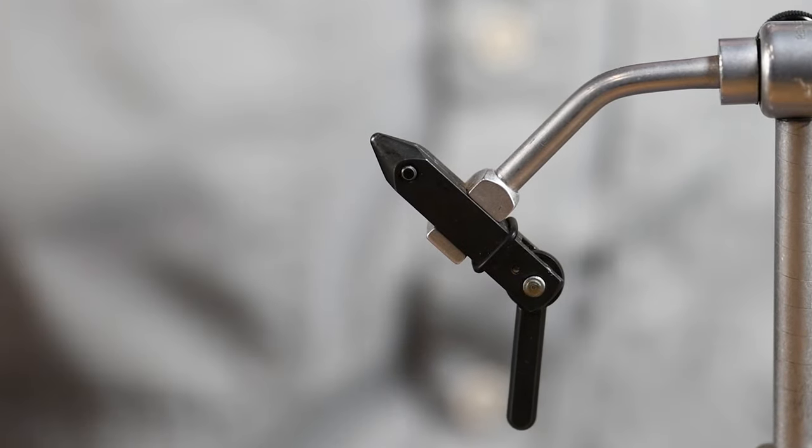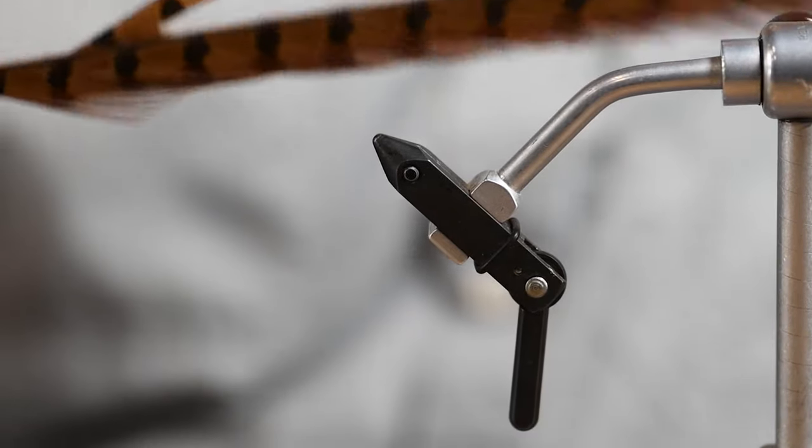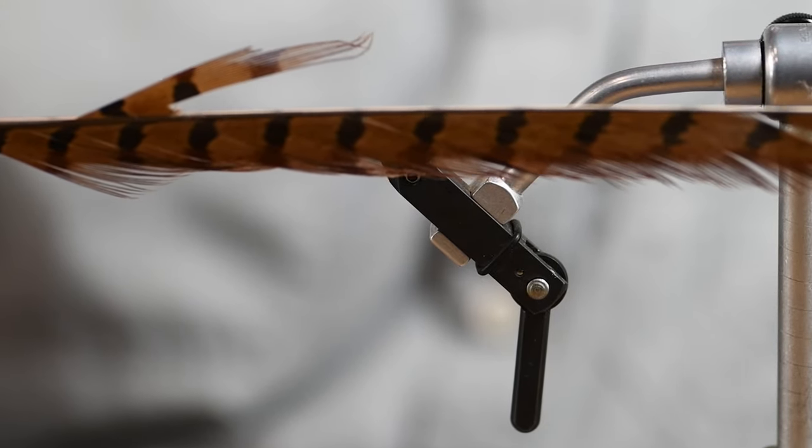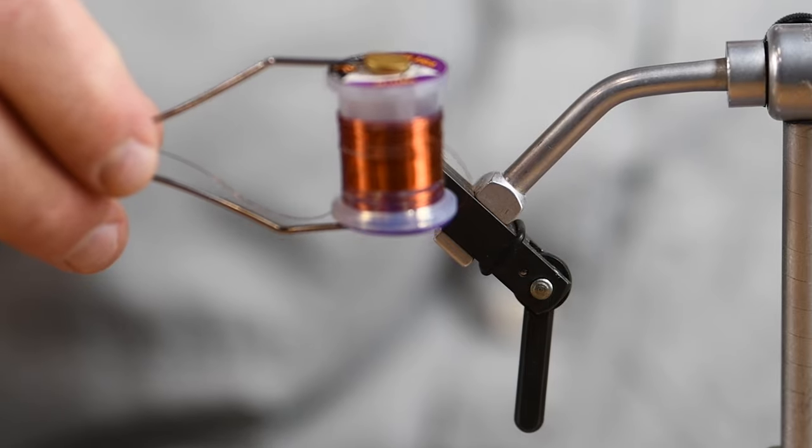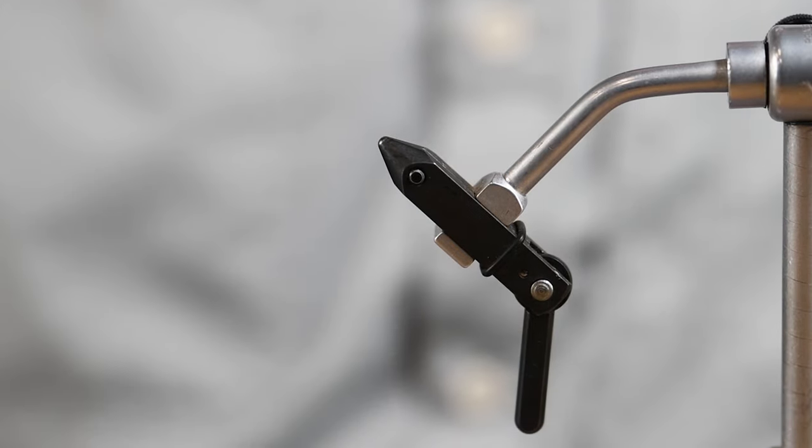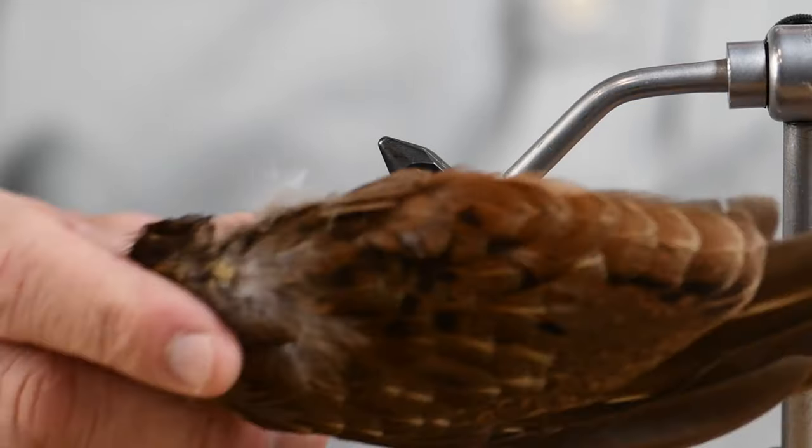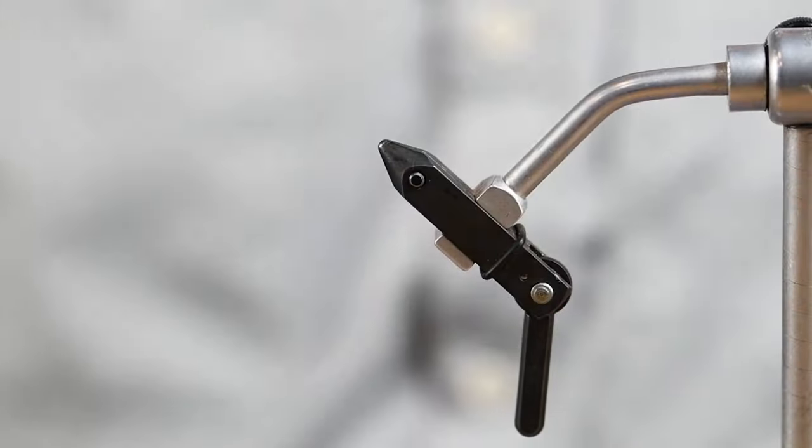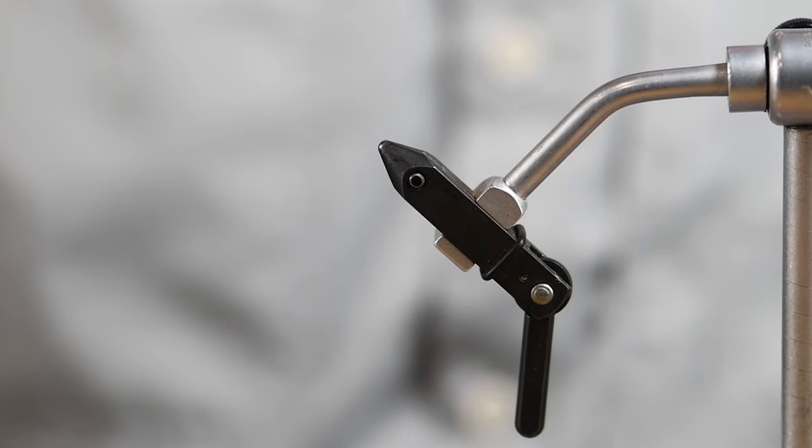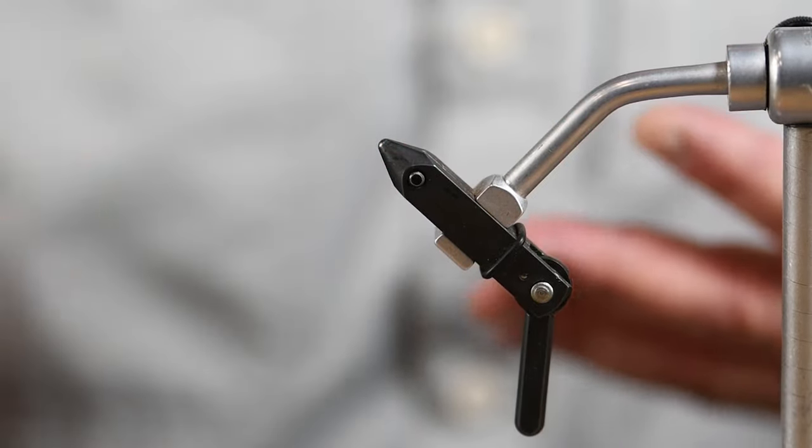Let's see, for the body, we'll be using pheasant tail, and pheasant tail will be the body and the tail. Copper wire for the rib. For the soft hackle, we'll be using the shoulder, kind of a shoulder feather from a Hungarian partridge. And, let's see, dubbing, I'll be using some hare's ear dubbing for the thorax.